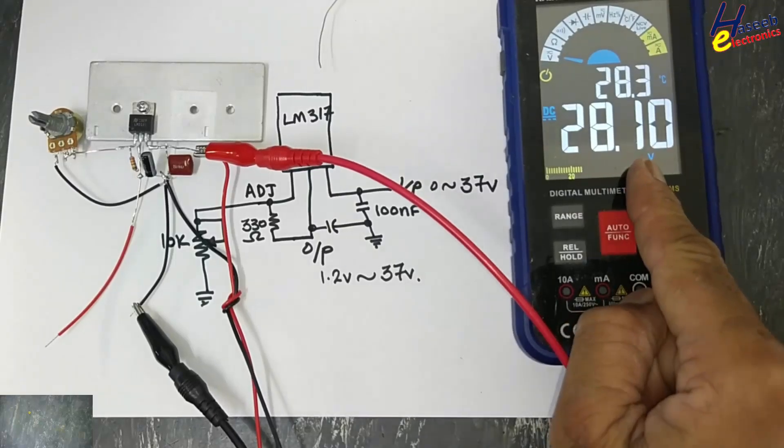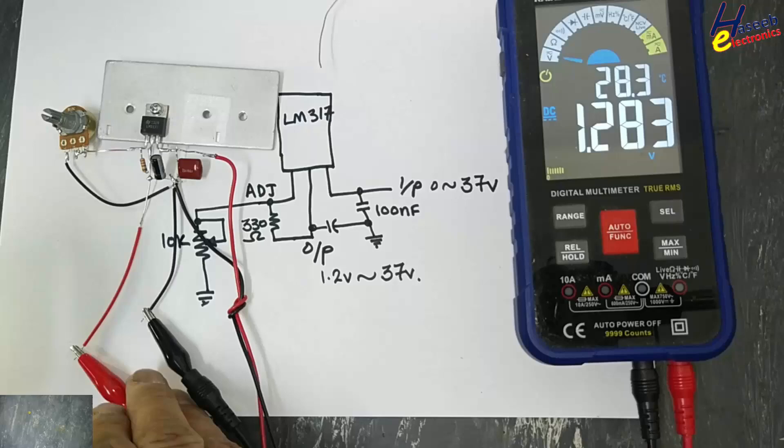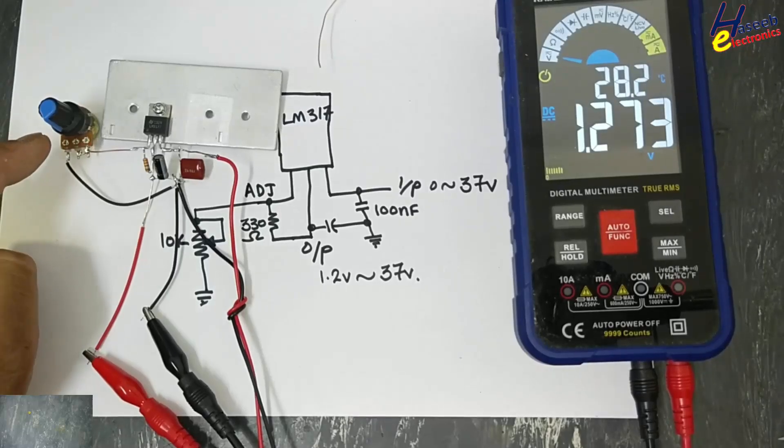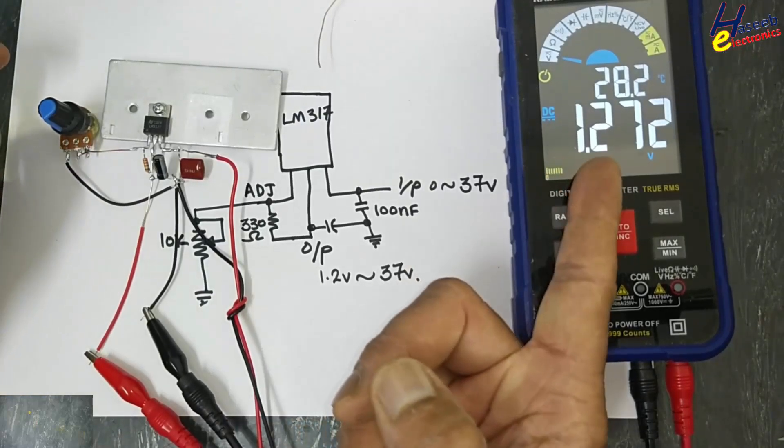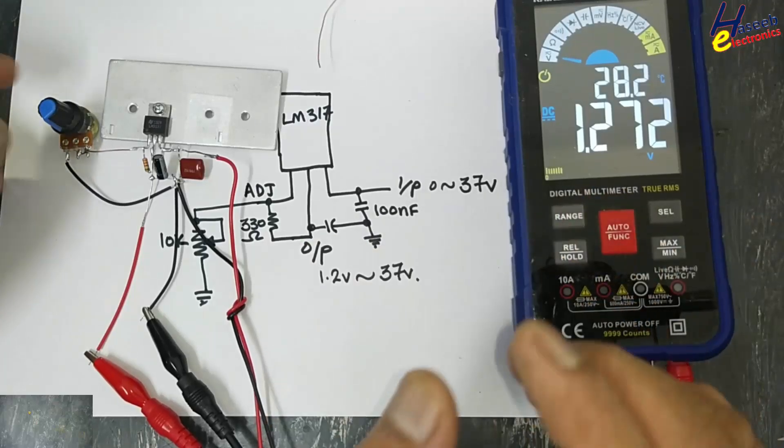28 volt input and potentiometer is at minimum 1.2 volts. This is minimum output of this circuit.